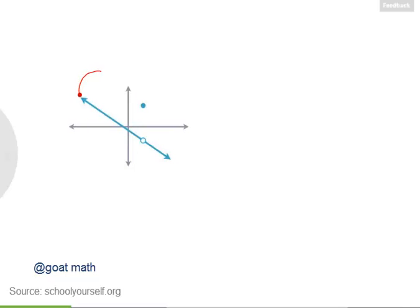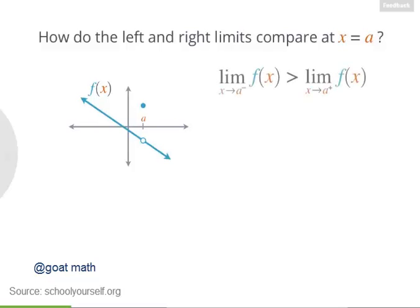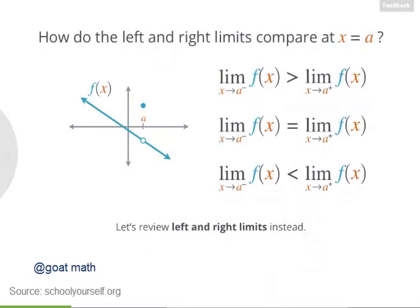Let's call this function f, and let's say it has a break or discontinuity at x equals a. What can you say about the left and right limits at x equals a? Is the left limit greater than the right limit? Are they equal? Or is the left limit less than the right limit? And if you want to review left and right limits instead, click down here.